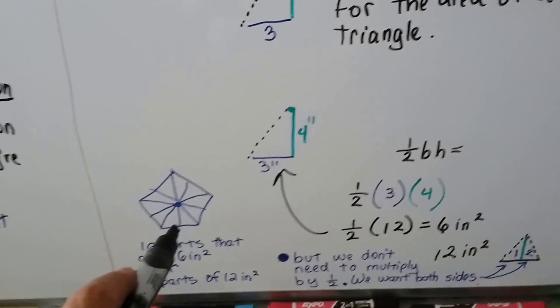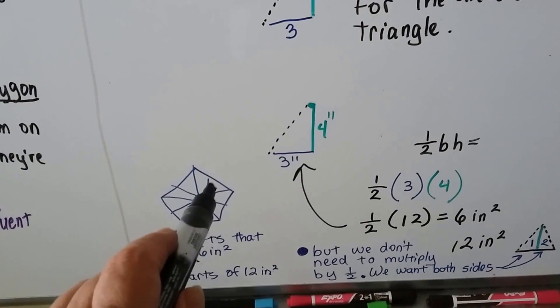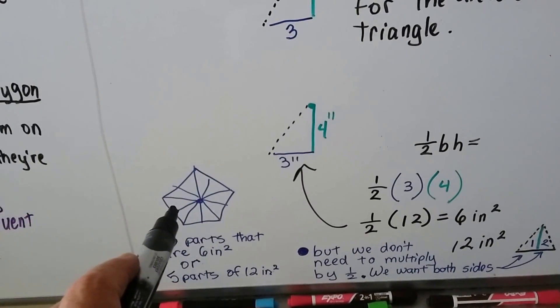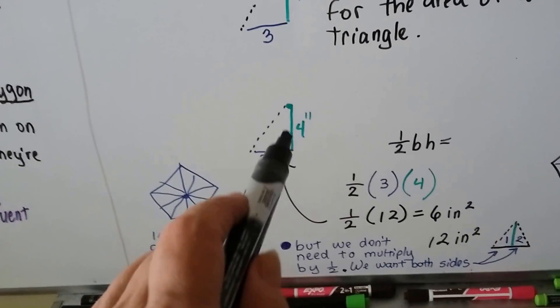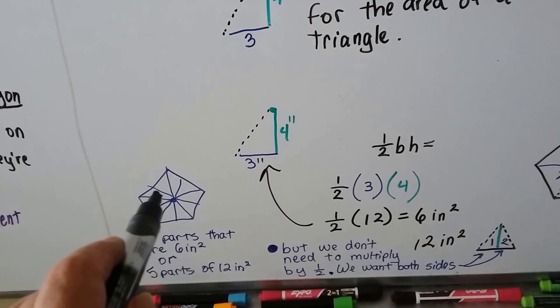Well, in a pentagon, there's how many of those little triangles? There's one, two, three, four, five, six, seven, eight, nine, ten of them. And if each one is six inches, that means it's 60 inches square, doesn't it?